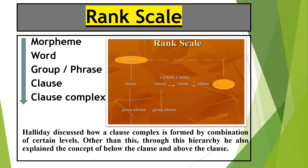Let us move towards rank scale. If we look at rank scale, we have morpheme, then we have word. On the other hand, if we go to the sound side, it starts with phoneme, but here morpheme also starts from phoneme. When we have a root morpheme, it can exist separately as a word. Then we have group or phrase — according to Halliday, we have different groups like nominal group. In traditional grammar, we used to say noun phrase, verbal phrase, prepositional phrases.